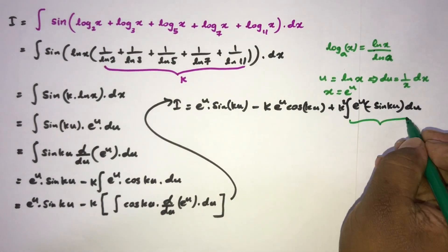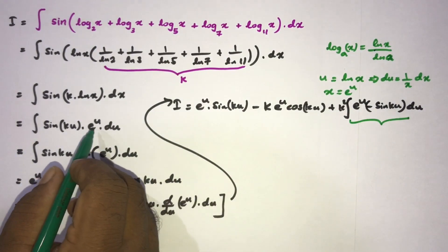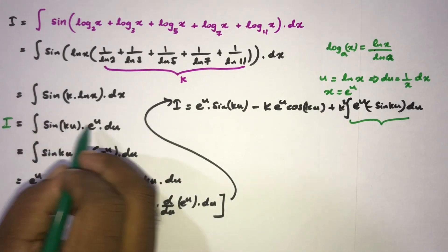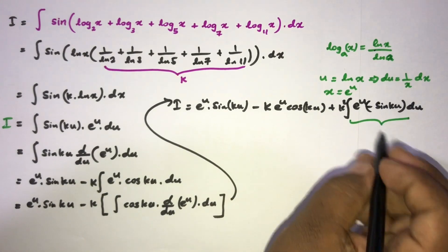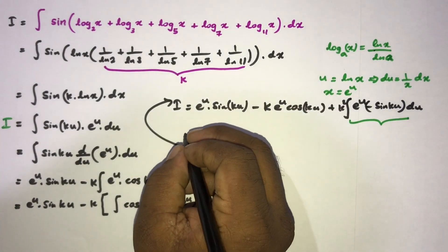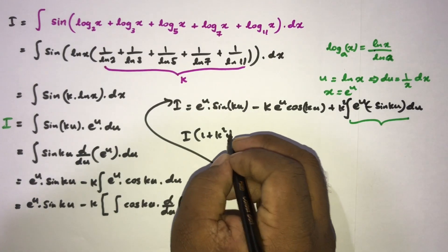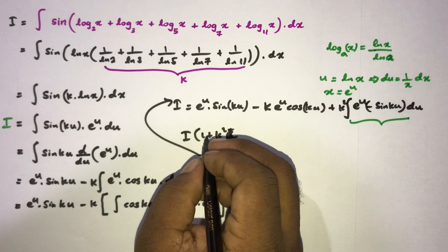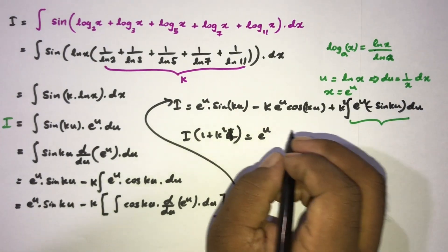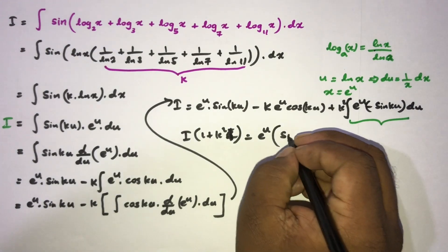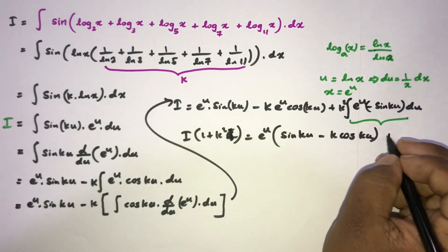We recognize that the integral of e to the u sin(ku) du is our original integral I. So we have I equals e to the u sin(ku) minus k·e to the u cos(ku) minus k squared·I. Bringing k squared·I to the left side, I times (1 plus k squared) equals e to the u times (sin(ku) minus k·cos(ku)) plus C.